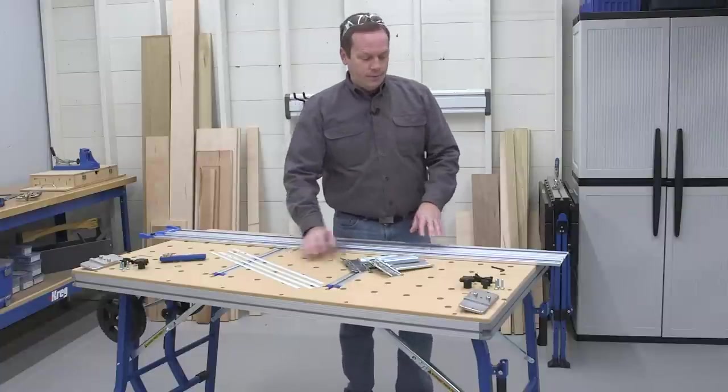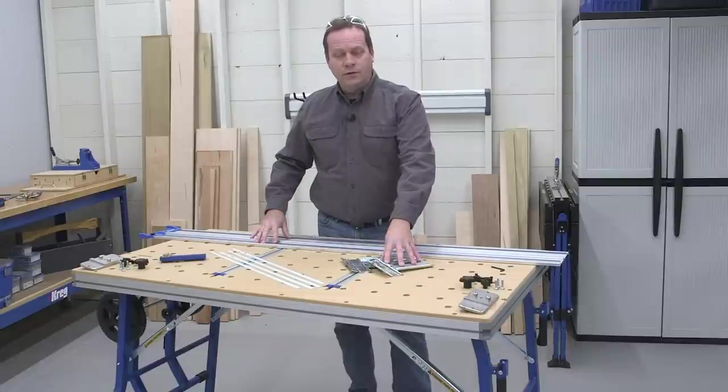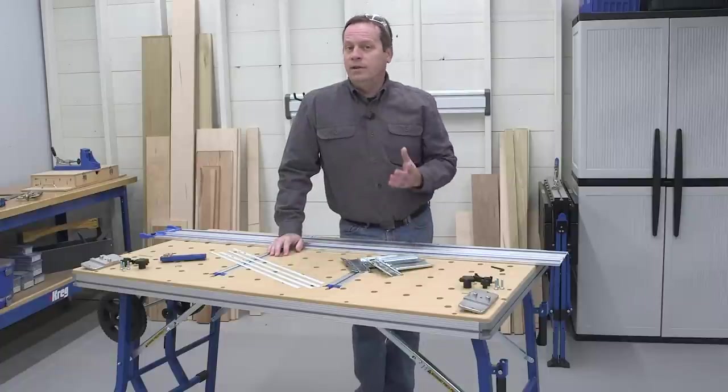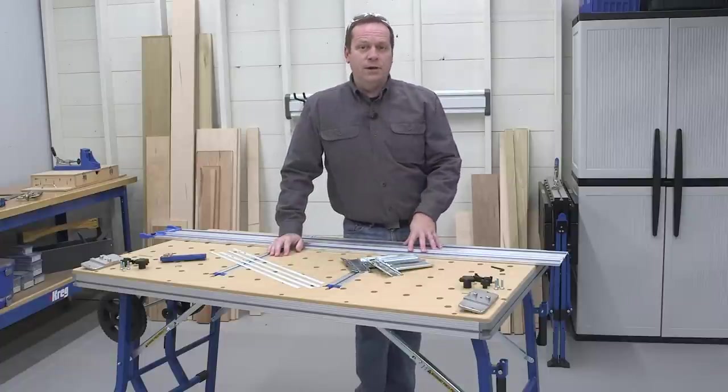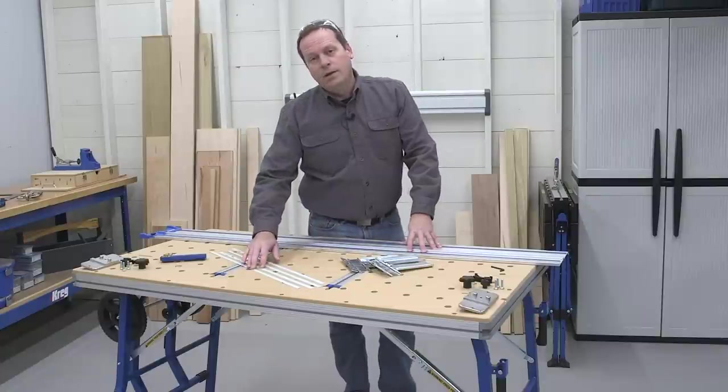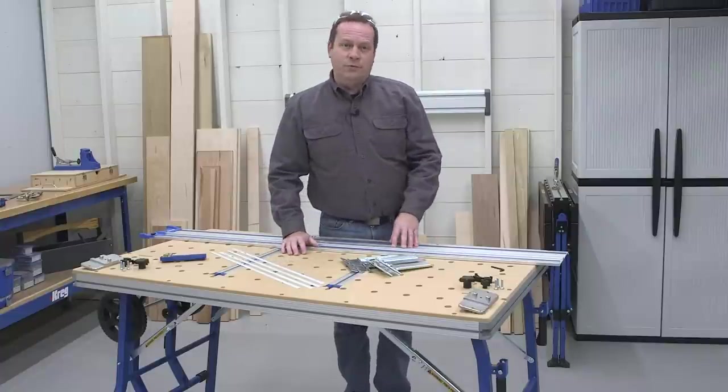With the table assembled, you'll need to install the guide track and guide track hinges. Then, you'll use the saw to make a cut in the table top that'll establish your cut line that you'll use from here on out. With that done, you can install the measuring tapes and calibrate them for accurate dead-on measurements every time.